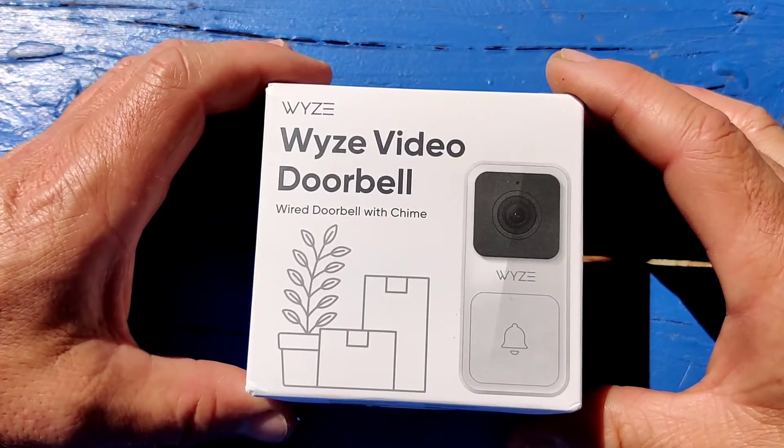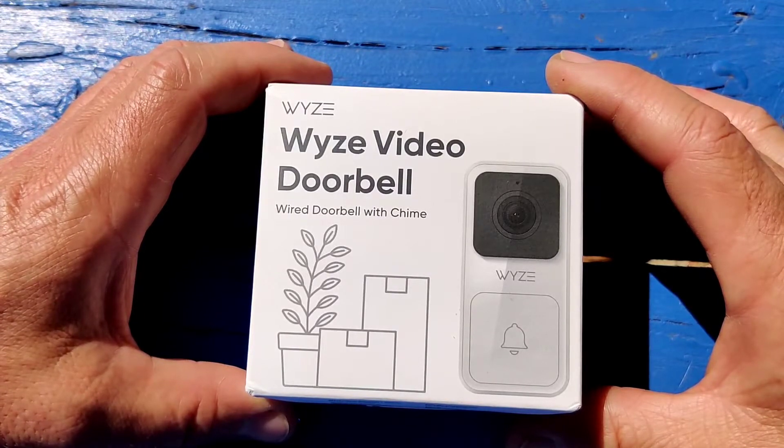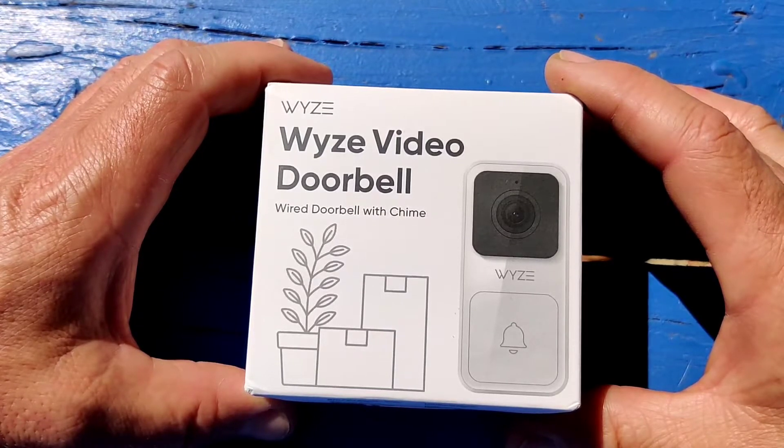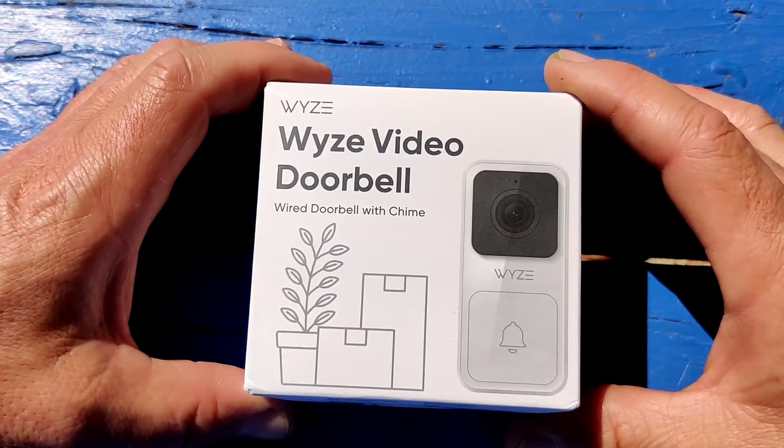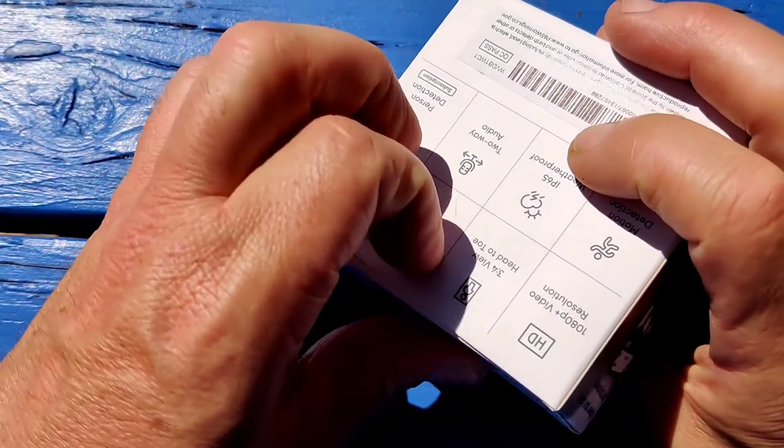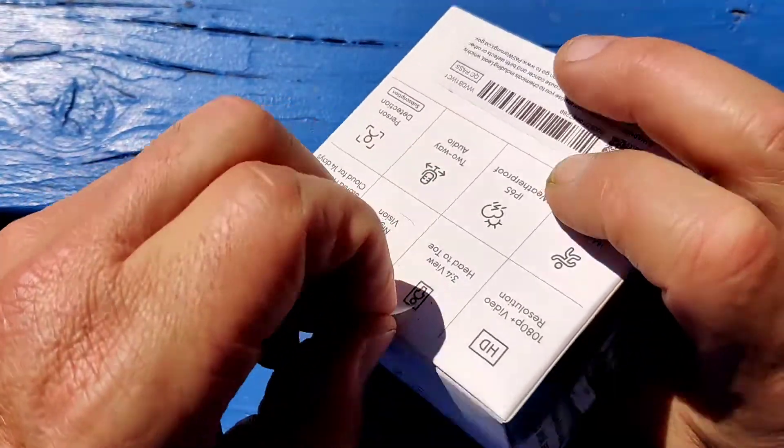What I'm going to have to do, which I will create a video showing, is get a transformer, the proper one, wired into a receptacle, run the wire, low voltage wire, to a spot in front of my door and then mount it there and be done with it. Let's see what's going on here in the box.